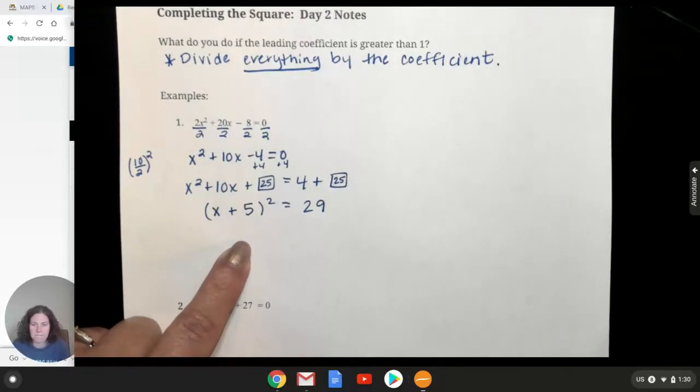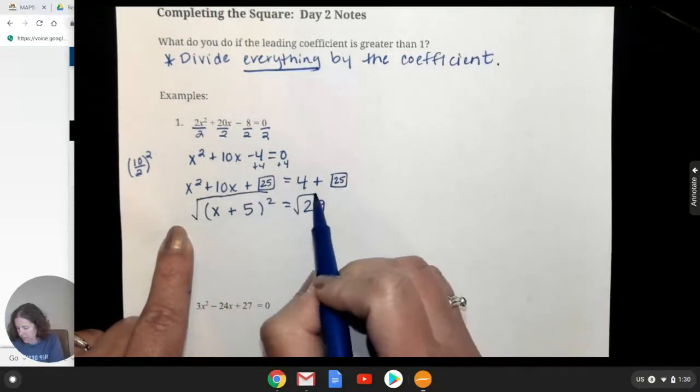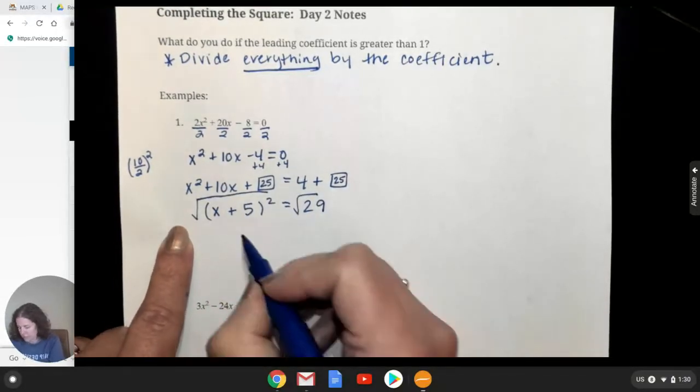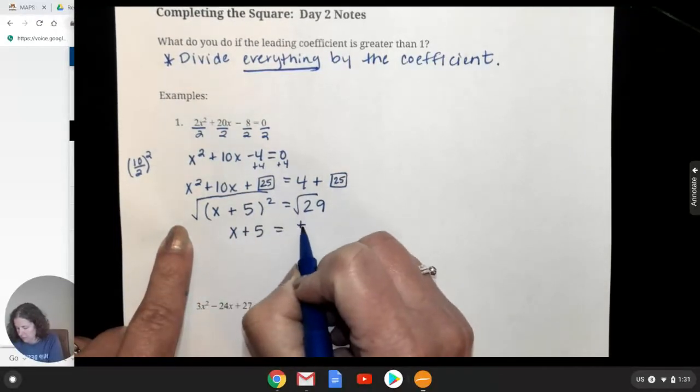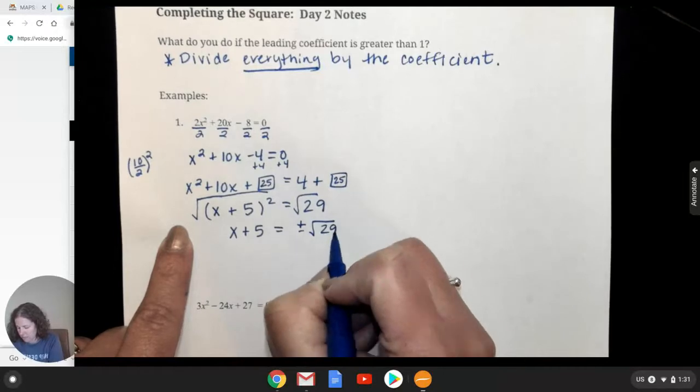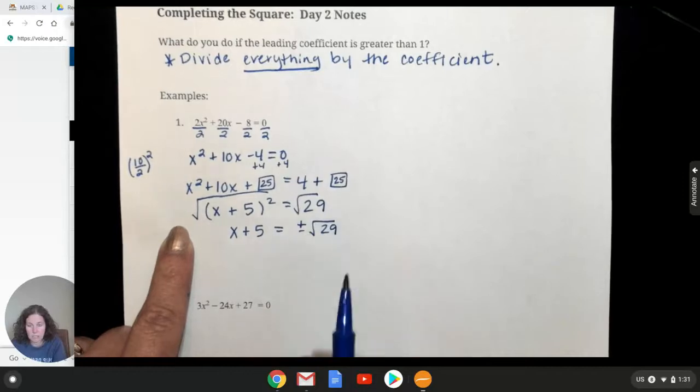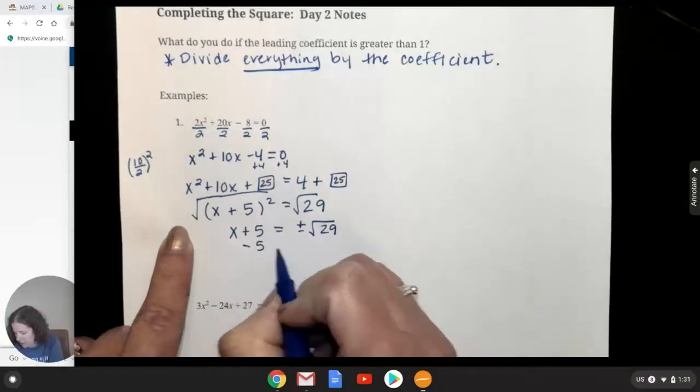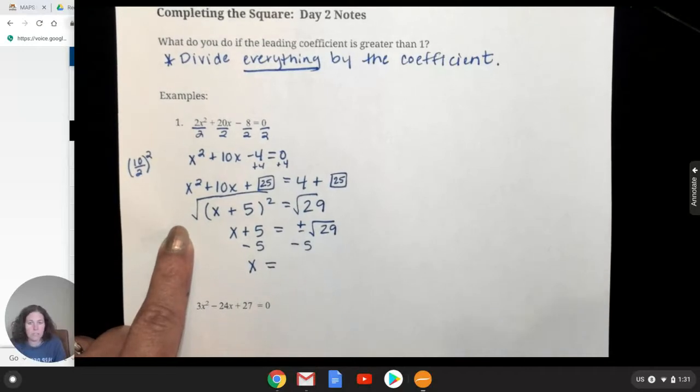Now we can solve using radicals just like what we have done probably for the past week here now. So square root both sides. You get X plus 5 equals. We can't take the square root of 29 without getting a decimal, so I'll just put that plus or minus in front of it so I don't forget that we need it positive and negative. And now I'm going to subtract 5 from both sides because we need to get X absolutely alone.